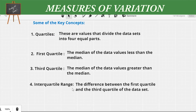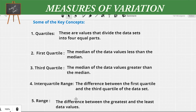The fourth concept is the interquartile range, or IQR. It is the difference between the first quartile and the third quartile of the data set. The fifth concept is the range, which is the difference between the greatest and the least data values.